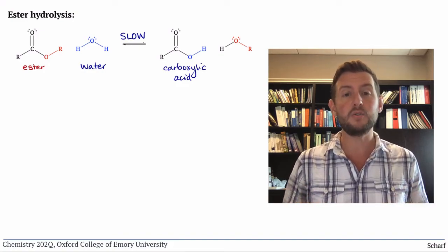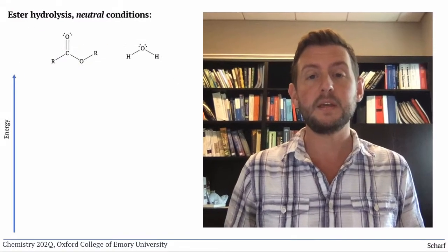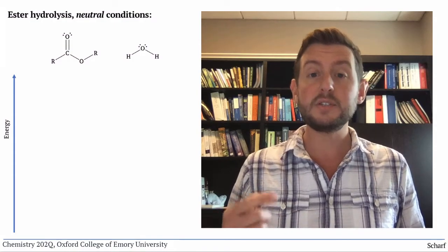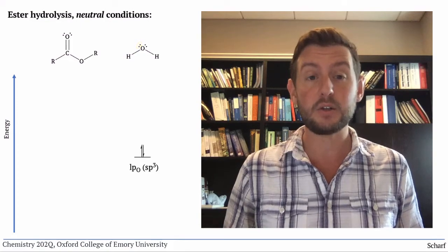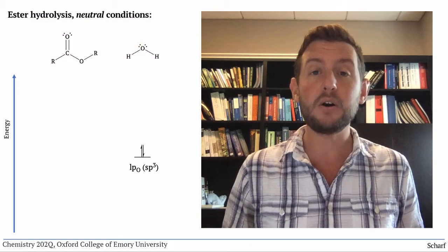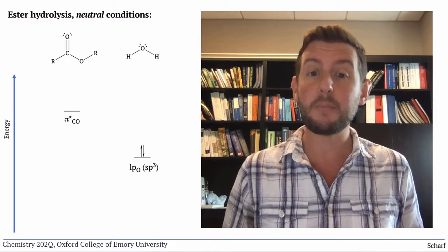Let's look at the MOs for this step. The nucleophile uses its HOMO, here an sp3 hybridized lone pair on oxygen, to attack the LUMO of the electrophile, CO pi star.